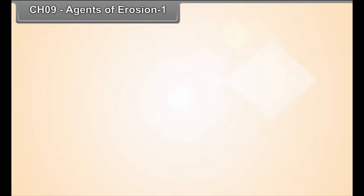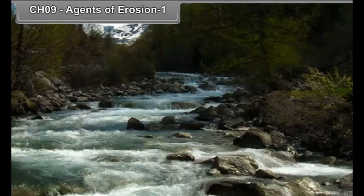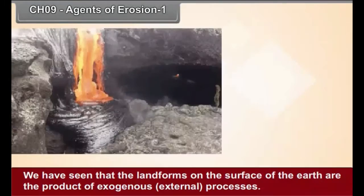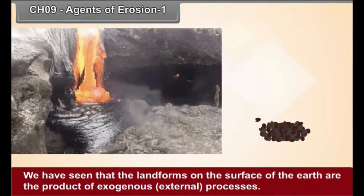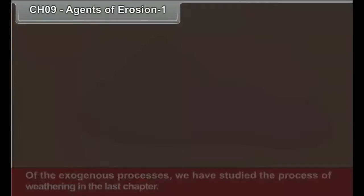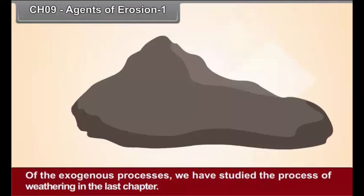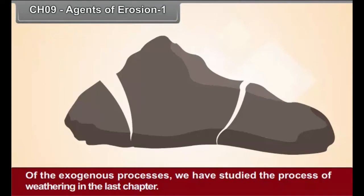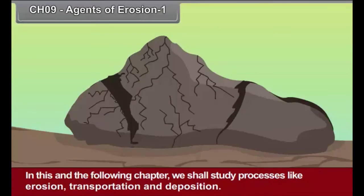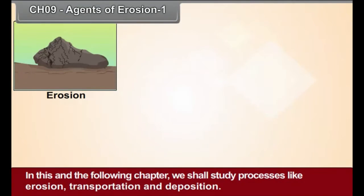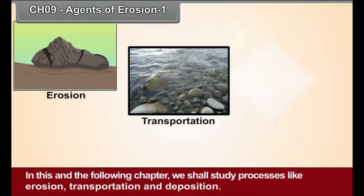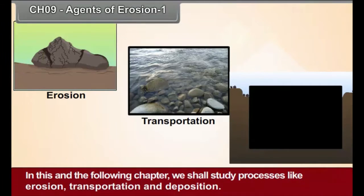Chapter 9: Agents of Erosion, Part 1. We have seen that the landforms on the surface of earth are the products of exogenous, external processes. Of the exogenous processes, we have studied the process of weathering in the last chapter. In this and the following chapter, we shall study processes like erosion, transportation and deposition.